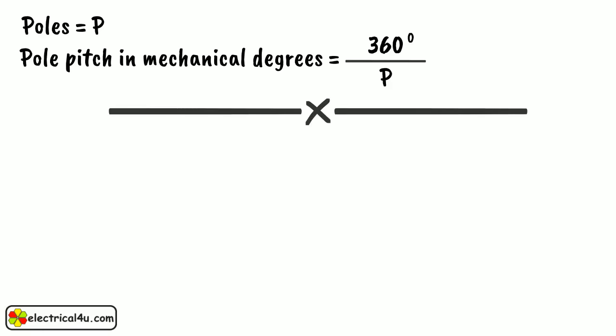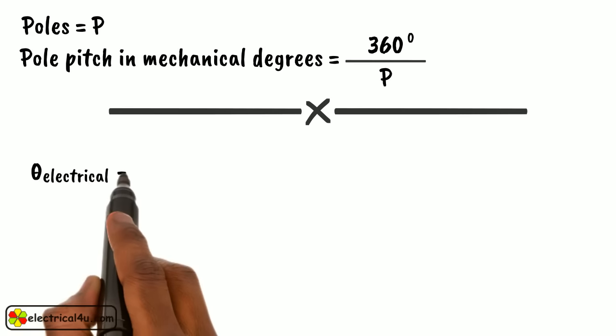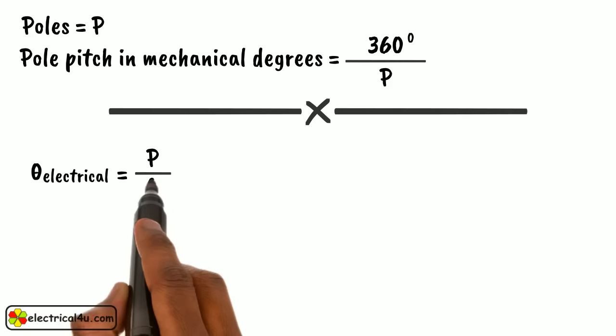The relationship between electrical and mechanical degrees can be expressed as theta electrical equals to p by 2 into theta mechanical.